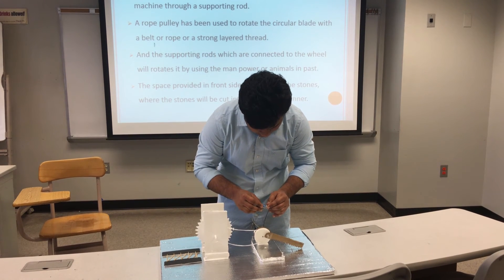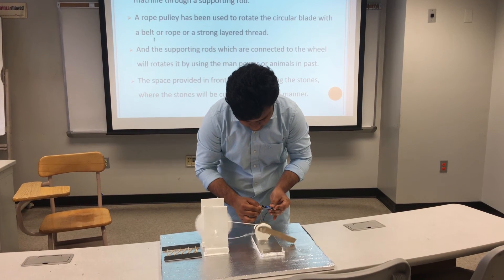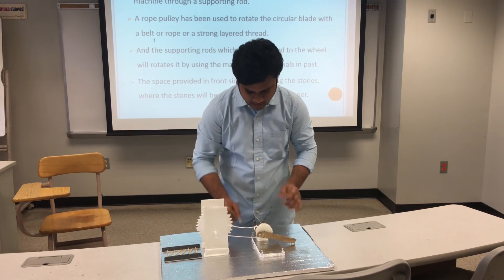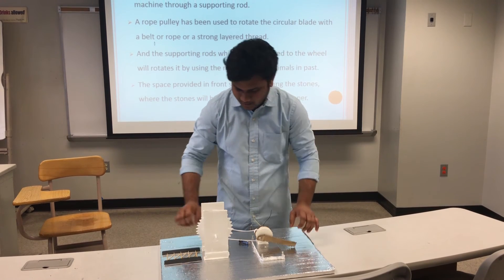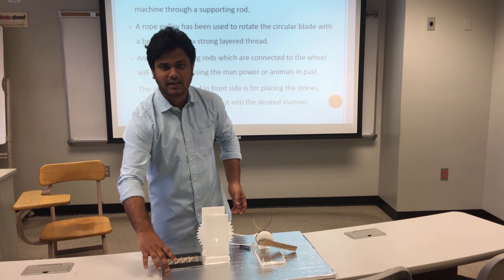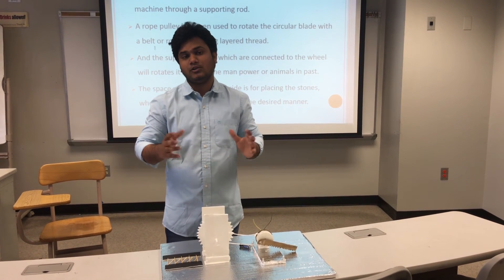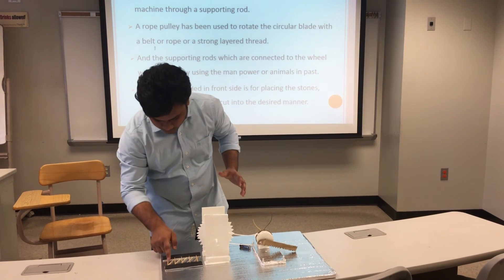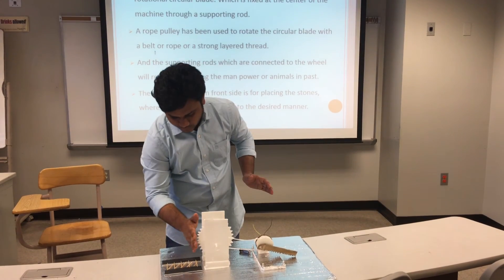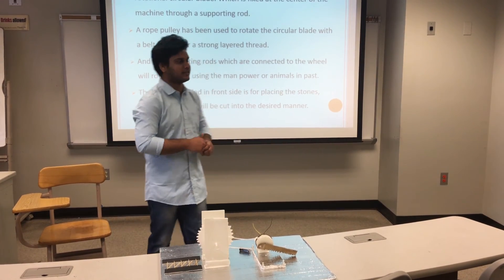Here you can see how it works. This is the battery — I am giving the connection to the motor, then it is going to rotate. Here you can see it is going to rotate like this. Then the stone will be cut here and here also. The front section is designed for placing the stones. The lifting of stones is also a difficult task, so those clips are arranged for rolling the stones very easily to move in front of the circular blade. This is the working prototype of this project.